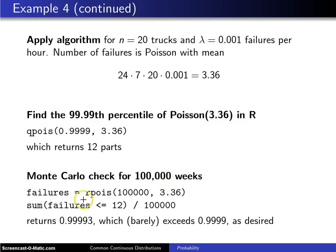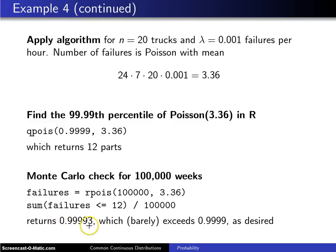If we want to do a Monte Carlo check for 100,000 weeks, here's how it might go. We use the rpois function, which generates 100,000 Poisson random variables with lambda equal to 3.36, stored in a vector called failures. Then we find the estimated probability that failures is less than or equal to 12: any time an element is less than or equal to 12, it returns a one; those are summed and divided by 100,000. This returns 0.99993, which just barely exceeds our threshold of 0.9999 as desired, supporting our solution to order up to 12 parts.